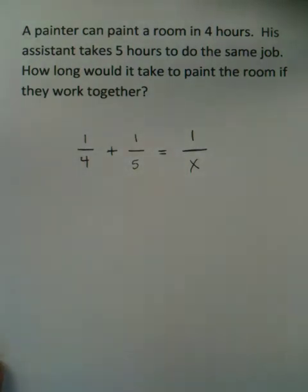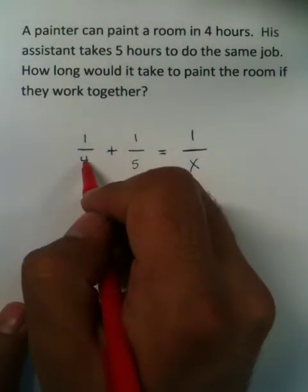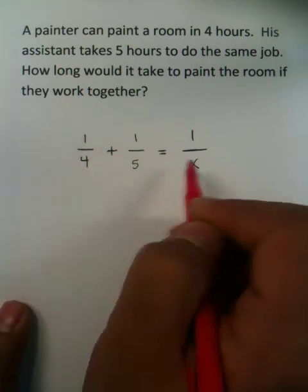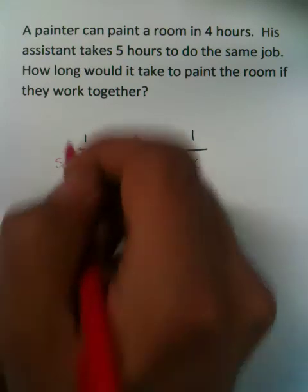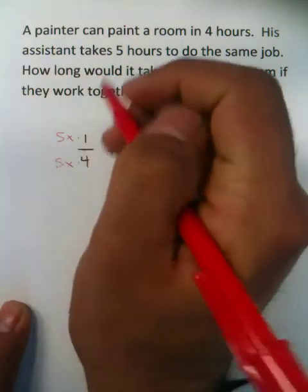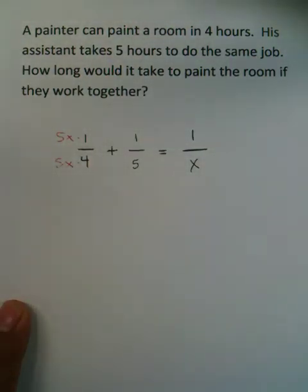Lots of ways of going about this. Multiplication property of equality. You can get common denominators. I'll show you the common denominator method. This obviously has a 4, this has a 5, this has an x. So if you put a 5 and an x and multiplied it by that 4 and a 5 and an x multiplied it by that 1, you're one step closer to a common denominator.